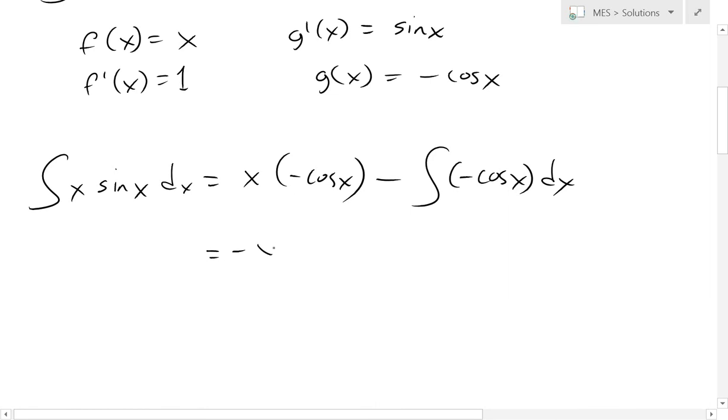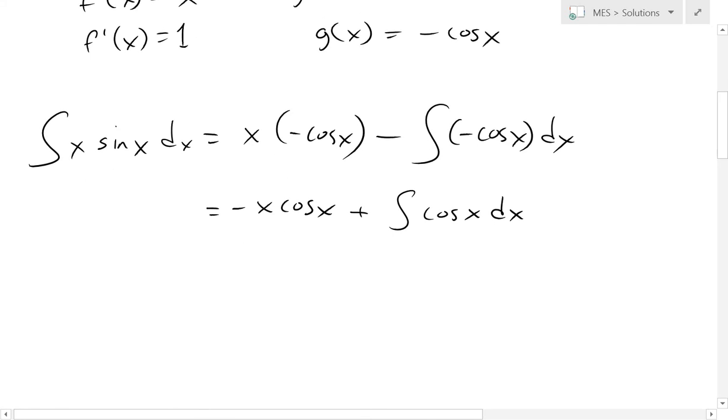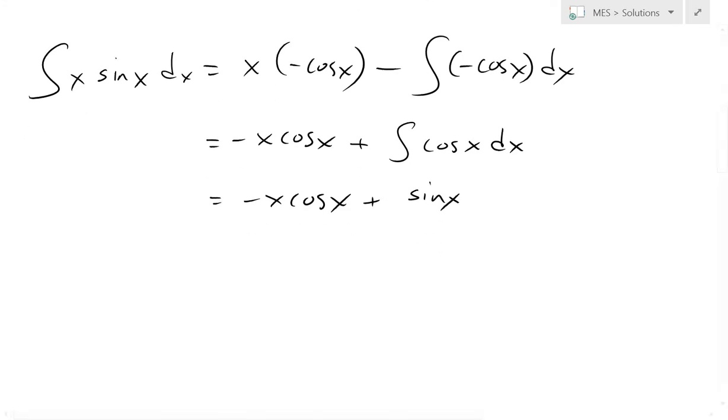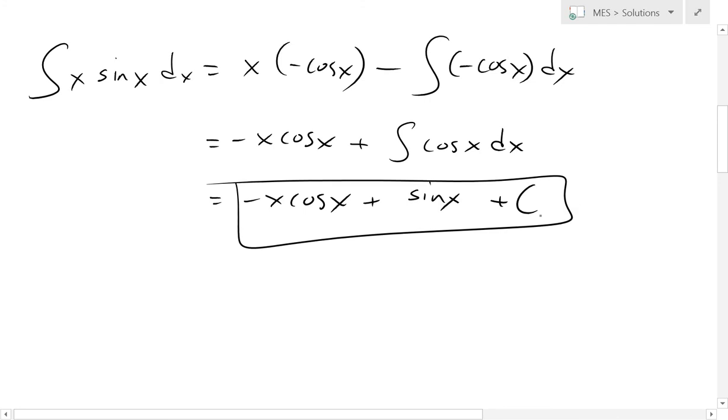This will be negative x cos(x). The negative sign gets out, so we can just add a plus and the integral of cos(x), which is sine(x). We get negative x cos(x) plus sin(x), and this is our answer. Actually, I forgot to add a constant. Whenever you have an indefinite integral, always add a constant there.